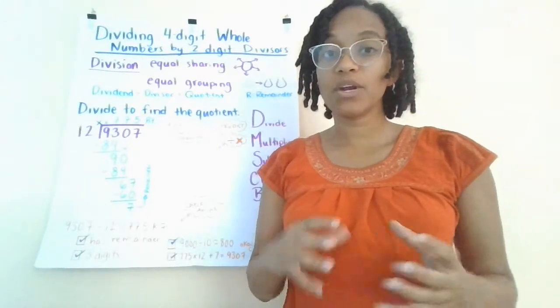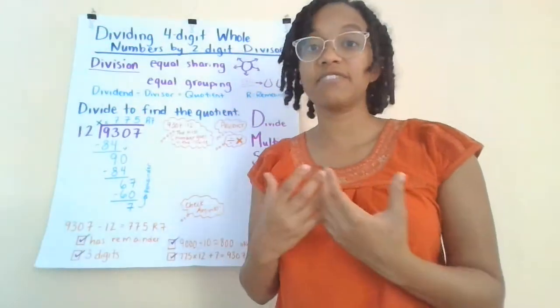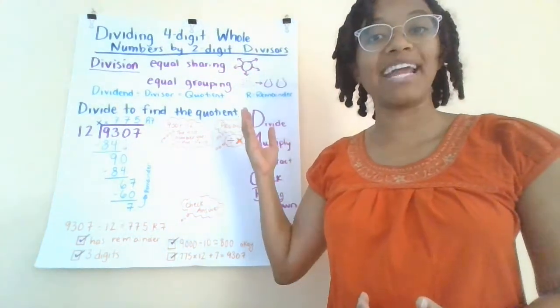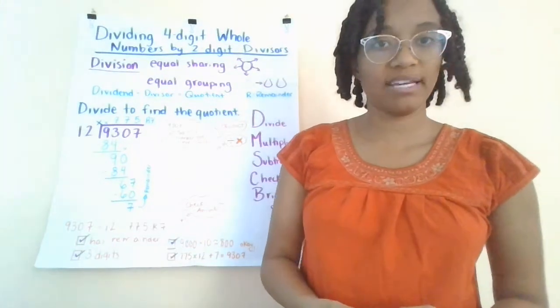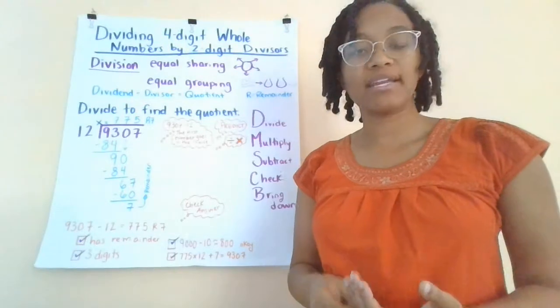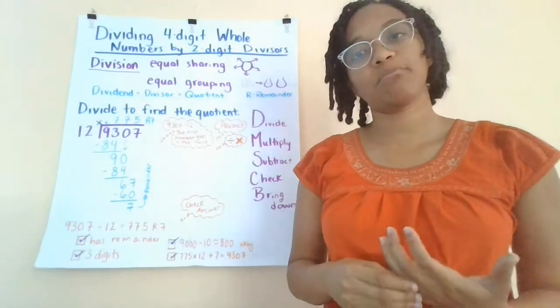When our dividend doesn't divide evenly into the divisor, the quotient will also have a remainder. A remainder is an extra leftover piece and we abbreviate that R.